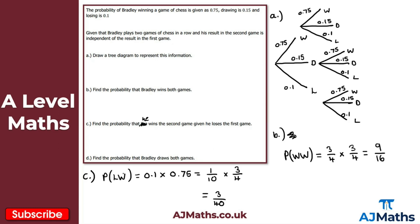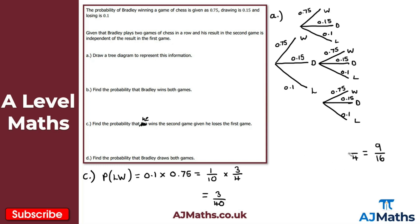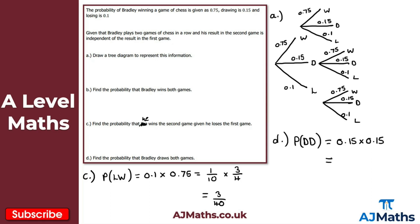For part D, find the probability that Bradley draws both games. Following the draw branch twice on the tree diagram, that's going to be 0.15 times 0.15, which gives us 0.0225. That's our solution to part D, and that gives us the solution to question 2 overall. That brings us to the end of this video on tree diagrams.